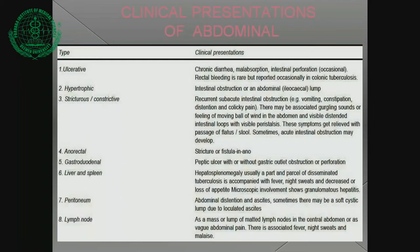Anorectal tuberculosis presents with stricture or fistula formation. Gastroduodenal tuberculosis presents as peptic ulcer with or without gastric outlet obstruction or perforation. Liver and spleen: hepatosplenomegaly, usually as part of disseminated tuberculosis, is accompanied by night sweats and decreased or loss of appetite; microscopy shows granulomatous hepatitis. Peritoneal involvement presents with abdominal distension and ascites; sometimes there may be a soft cystic lump due to loculated ascites. Lymph node involvement presents as a mass of matted lymph nodes.